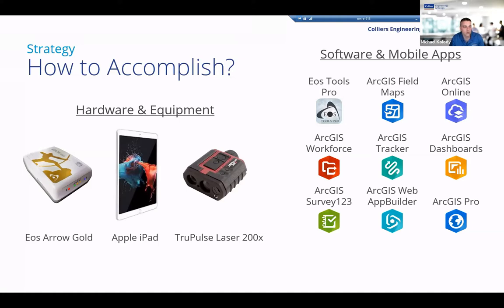You can also use Android devices or Trimble — there's a whole host of different hardware manufacturers that this works with. Field Maps works with Android and iOS devices. On the left you see a TruPulse Laser Range Finder; that integrates directly into Field Maps, which is really nice. For the various software and mobile apps we use, our specific hardware and software configuration includes the EOS Tools mobile app, which is the main app used to configure, monitor, and pair your GNSS receiver. Each of the different GNSS manufacturers has different apps as well.